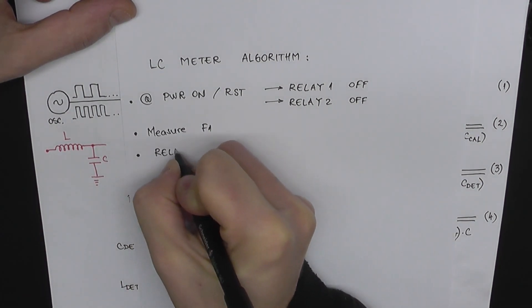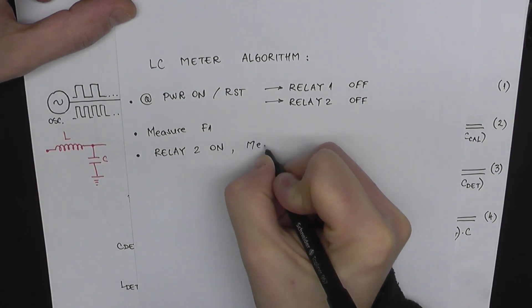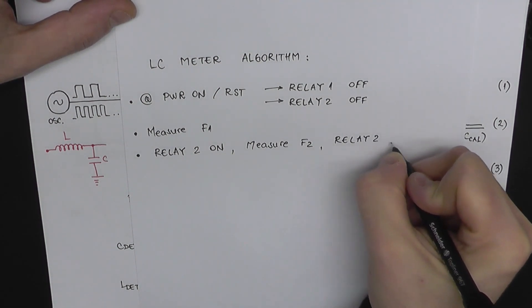Step 3: We switch on relay 2, which will connect the calibration capacitor to the oscillating circuit, and then we measure the frequency again, and then we switch relay 2 off.